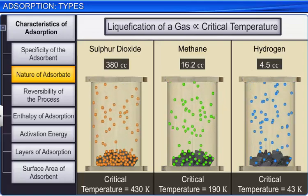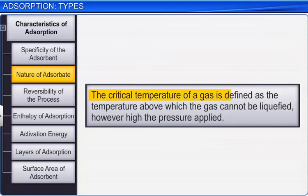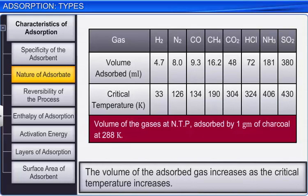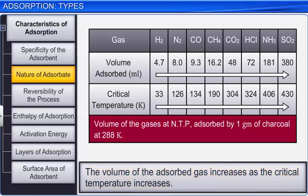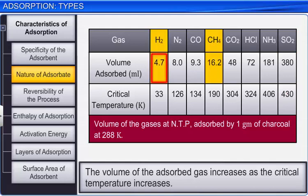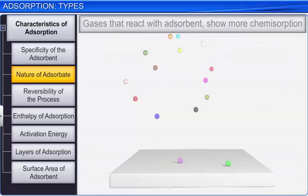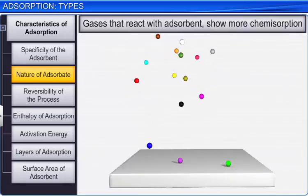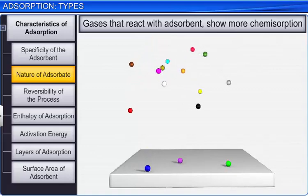The critical temperature of a gas is defined as the temperature above which the gas cannot be liquefied, however high the pressure applied. The critical temperature of sulfur dioxide is 430 Kelvin, so it is adsorbed more on charcoal than methane and hydrogen, which have critical temperatures of 190 and 33 Kelvin respectively. In chemical adsorption, no correlation is seen between the amount of gas absorbed and the critical temperature; adsorption depends on the chemical nature of the gas.